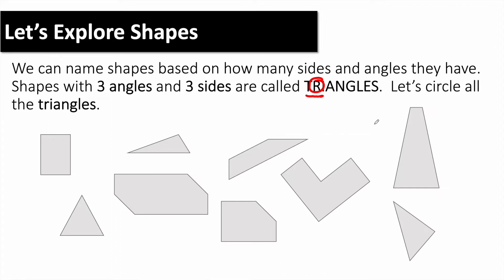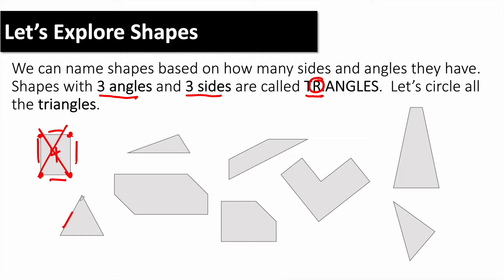So let's look at all these different shapes and circle all the triangles. We know that we're going to circle the shapes that have three angles and three sides. Teachers, here you still want to go through and quickly model how to make sure you're circling all the triangles. Let's count — how many sides and angles does this shape have? Four. Nope, not a triangle. Let's check here.